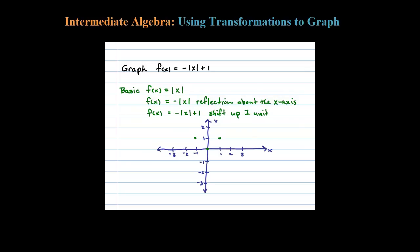It looks something like this. Now in purple, let's graph the reflection about the x-axis. When we plug in negative one, we get negative one. When we plug in one, we get negative one.